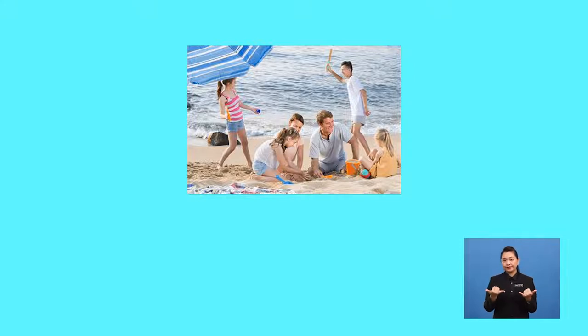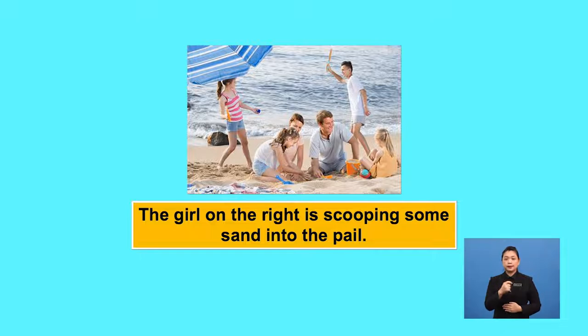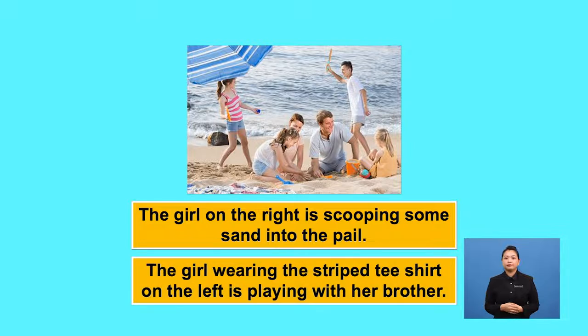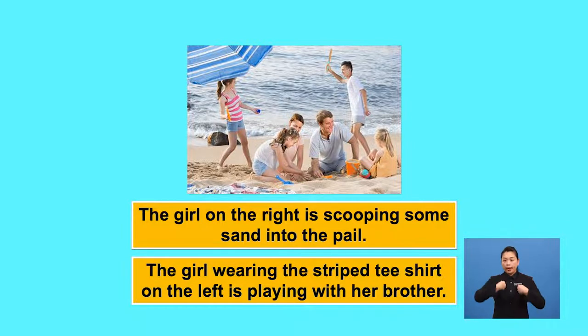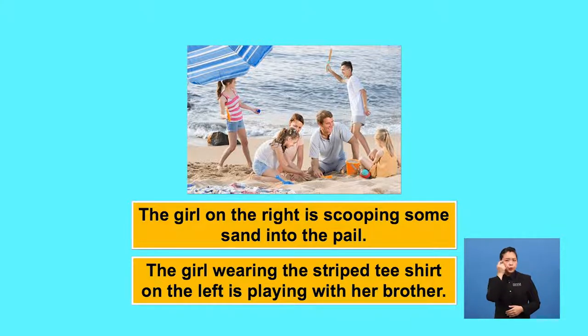Let's look at this picture again. What can you say about the picture now? Let's use the phrases we've just learned. You can say: 'The girl on the right is scooping some sand into the pail.' Or: 'The girl wearing the striped t-shirt on the left is playing with her brother.' Do you notice how this simple addition makes your description clearer?